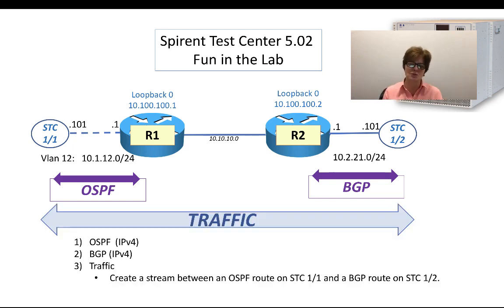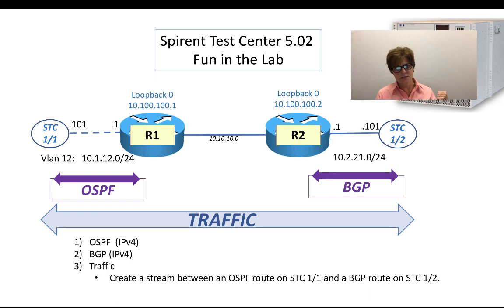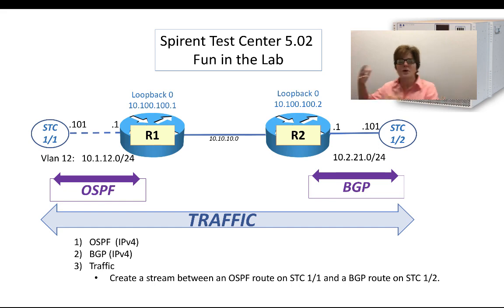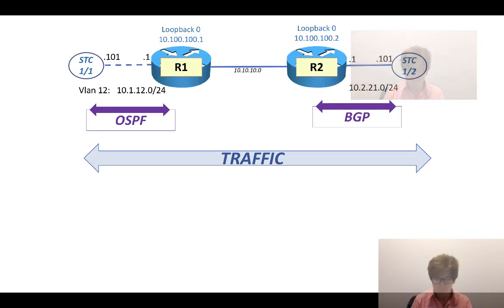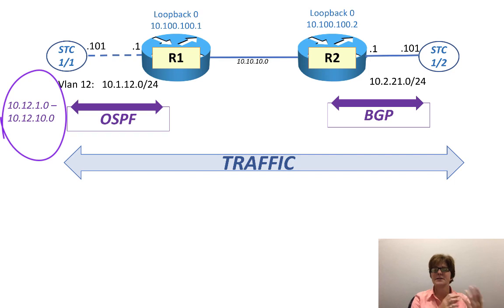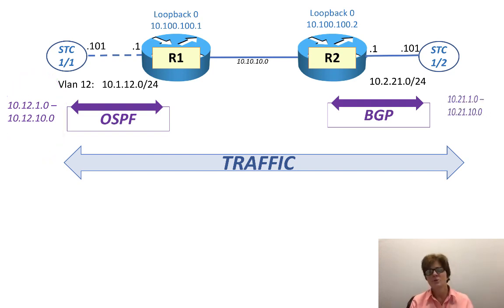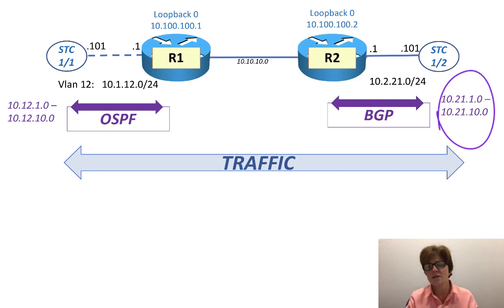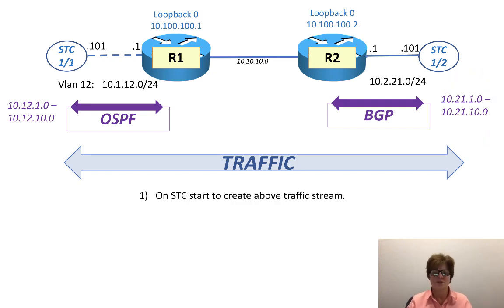We're going to create a stream between OSPF route prefixes coming in from the Spirent Test Center behind the OSPF neighbor that router 1 has, talking to prefixes from the BGP neighbor that router 2 is talking to. OSPF was sending 10 prefixes — 10.12.1.0 through 10.12.10.0 — and BGP was sending 10 prefixes — 10.21.1.0 through 10.21.10.0. We're going to go to the Spirent Test Center to start creating those streams.